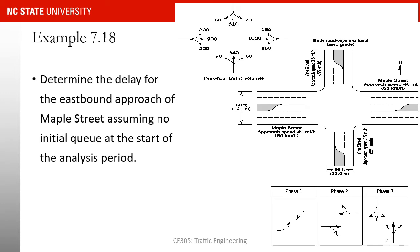So now we are at a point that we can work on another example. This is the same example that we have started working on in a series of previous examples in this chapter. You have an intersection, the traffic volumes are given, the phase sequence is given, we have already found minimum cycle green times and everything. The example wants us to determine delay for the eastbound approach of Maple Street, assuming that no initial queue is present at the start of the analysis period. I'm going to ask you to pause the video at this point for six minutes, work on these, and when you're done, come back and see how we are solving this problem.